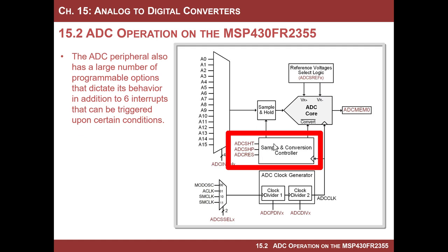There are a large number of programmable options, and it looks a little overwhelming when you first see all the control registers. But like all peripherals, we're just trying to get it going — look at the bare minimum to turn it on, and then go back and turn on advanced features. Of course, there are going to be flags that can generate interrupts — there are actually six separate flags that track what's going on, all of which can generate interrupts, though there's only one interrupt vector.